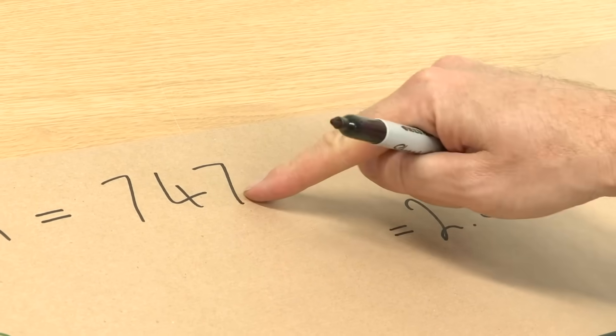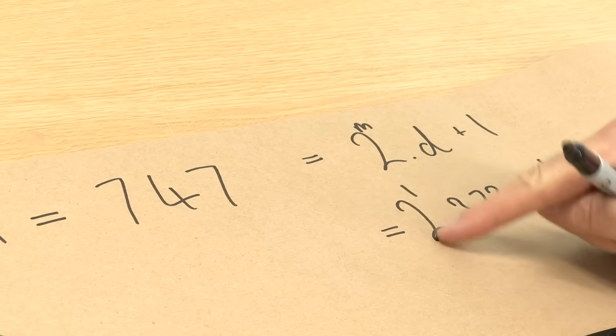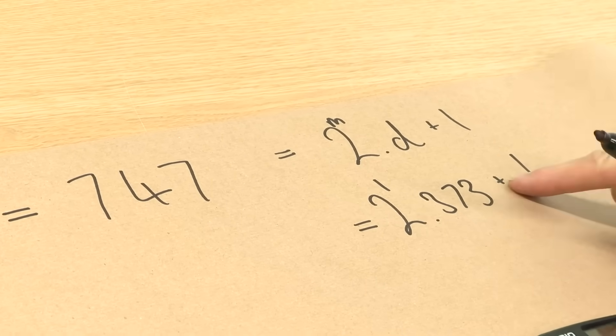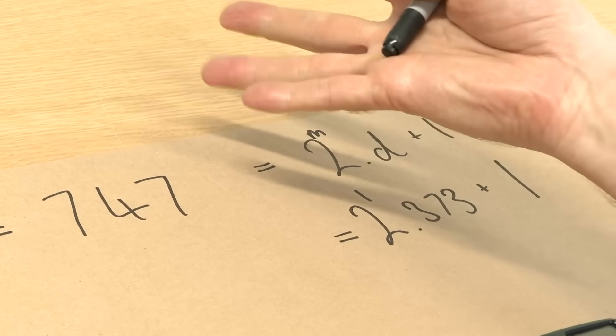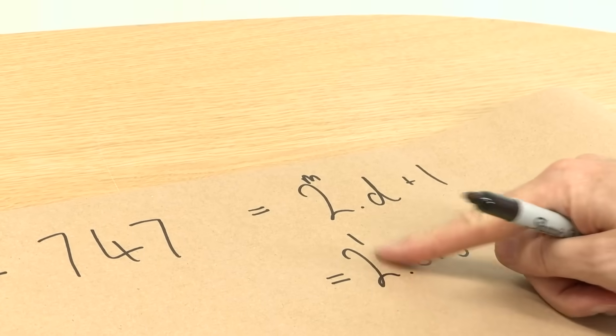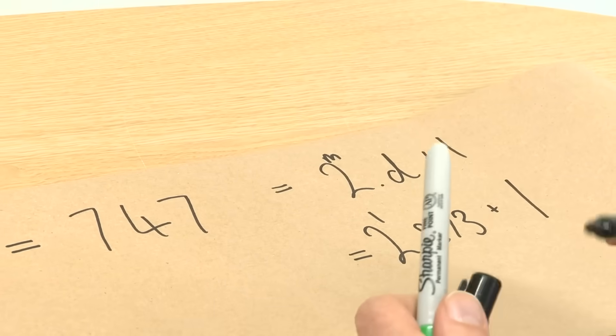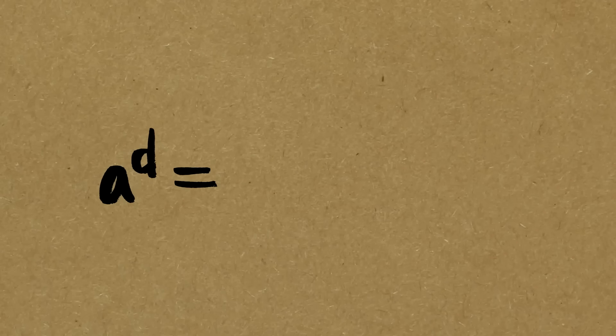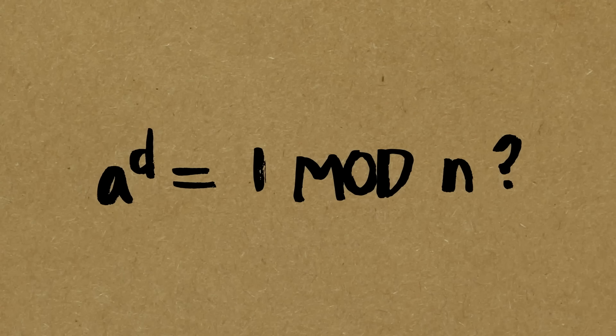So what you're doing is you're going, let's pretend it's a power of 2, but then we've got to multiply it by something and add 1, because it's not actually a power of 2. But this is, if it was, that's what it would be. So now we're going to ask, does a to the power of whatever this d is, does that equal 1 mod n? That's our question. Very simple question.